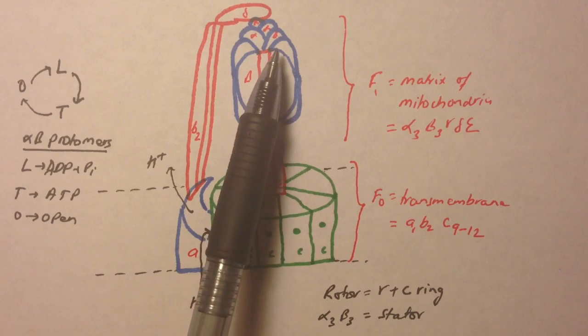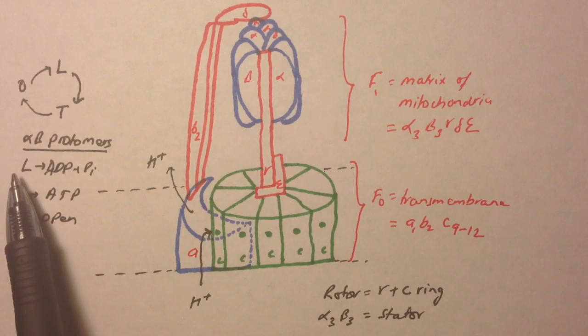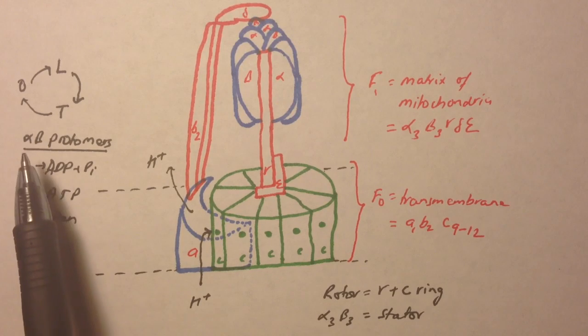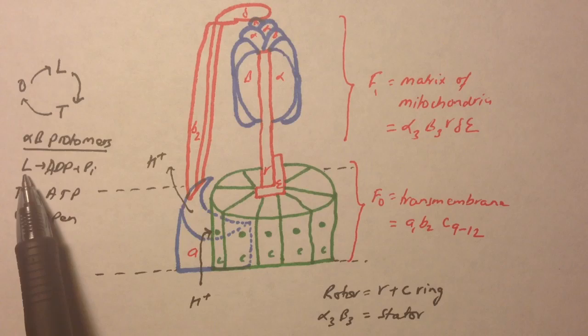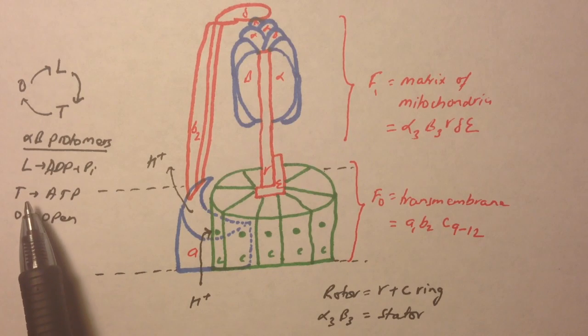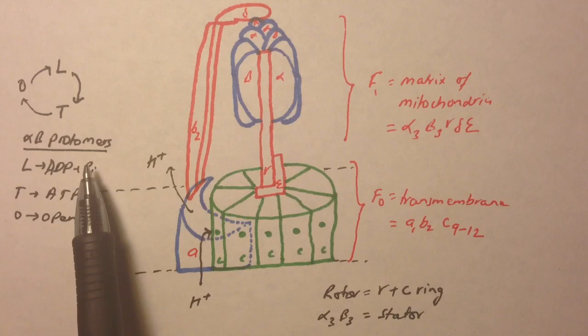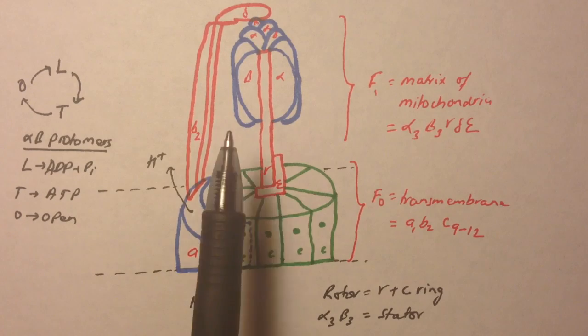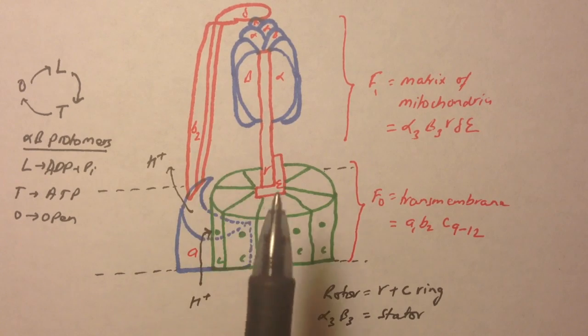So one group of alpha and beta can either be in L state, T state, or O state. L for loosely bound state where it loosely binds to ADP and Pi. T for tight state where ADP and Pi are tightly bound and it converts into ATP. O is for open state where the protomers don't bind to anything and the ATP leaves the alpha-beta subunit.